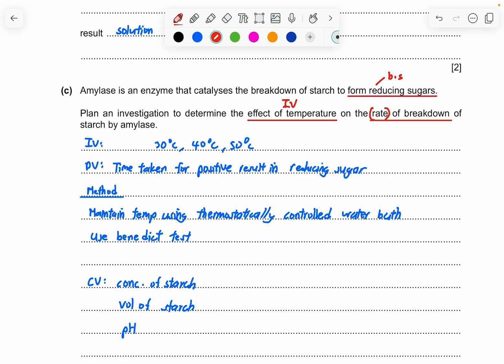The method, you can mention that how are you going to maintain 30 degrees? How are you going to maintain 40 degrees? How are you going to maintain 50 degrees? It's by using a thermostatically controlled water bath. So these four words must be together. It cannot be just thermostatically water bath. It cannot be water bath on its own. It has to be thermostatically controlled water bath. And how are we going to test for reducing sugar? It's by using the Benedict test. So you just mentioned this, you're already getting a mark.